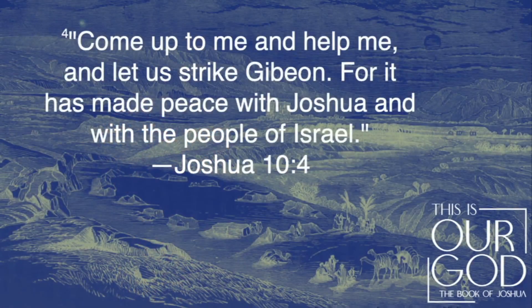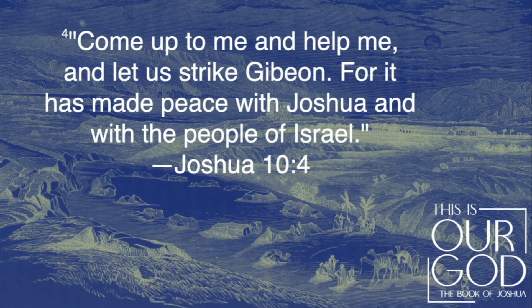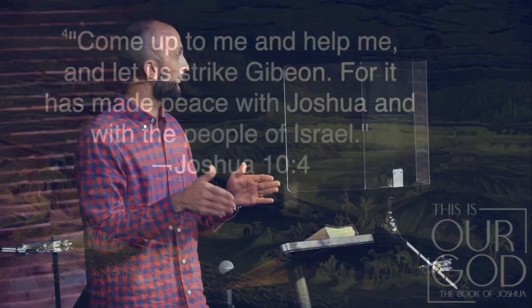They say, let's attack Gibeon because they're aligned with Israel. So Gibeon calls on Joshua. Now we're in an alliance. So you need to come help us now. And Israel says, okay, we're going to help you. The Lord promises Joshua victory over these Amorite kings, and then Israel defeats them.